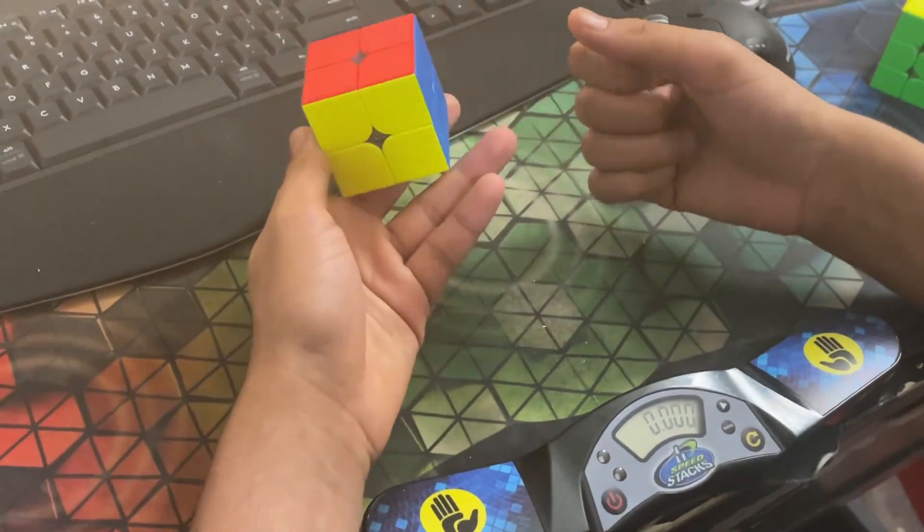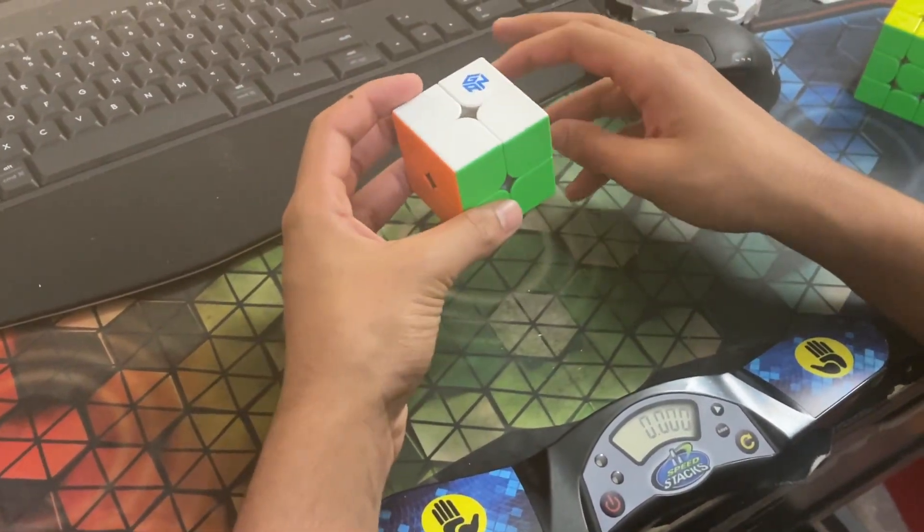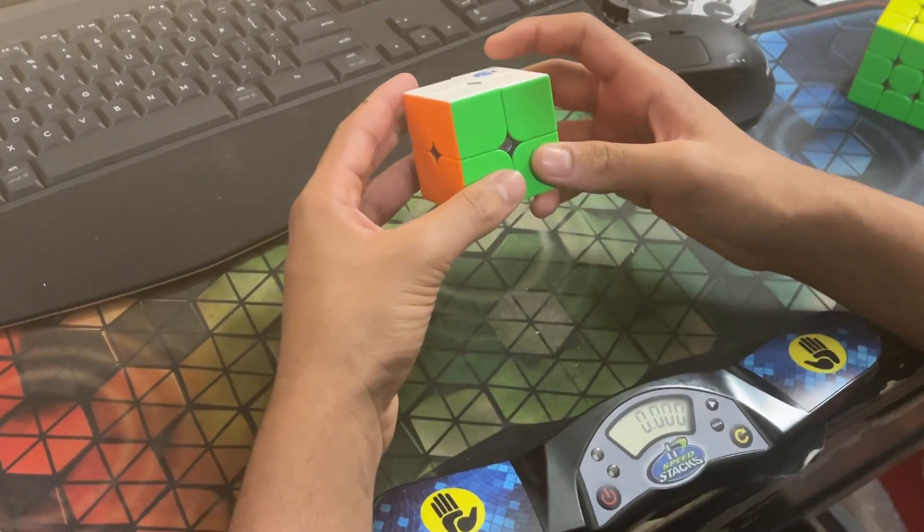Hello everyone, I'm going to be reconstructing my 117 official 2x2 average, which is WR8. So let's get into the first scramble.